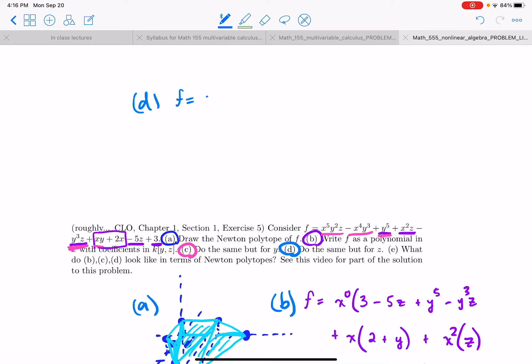So f is equal to z to the zero times 3 plus 2x plus xy plus y to the fifth minus x to the fourth y to the third. Okay. So that was a lot of them. And now how many terms have a z? z to the one. Well, we have x to the fifth y squared. An x squared. And then anything else with the z or a y to the third? Anything else with the z? A minus 5.